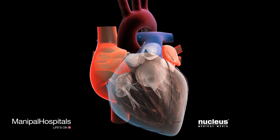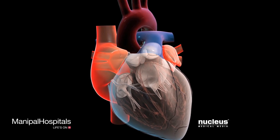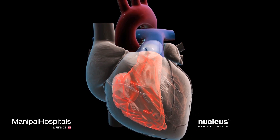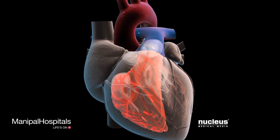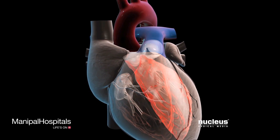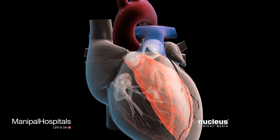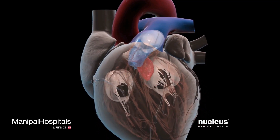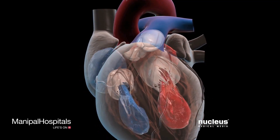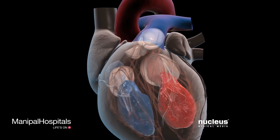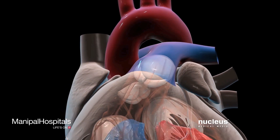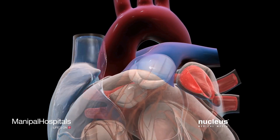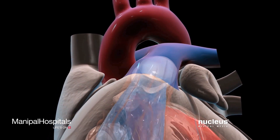The right and left atria connect to their respective ventricles. The right ventricle connects to the pulmonary artery and the left ventricle to the aorta. Valves are located at these connections to ensure that blood moves in only one direction. The parts of a valve that open and close are flaps of tissue called cusps.